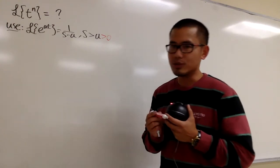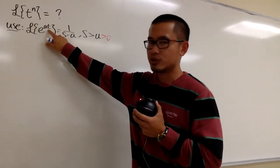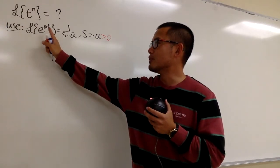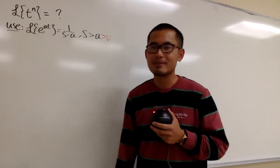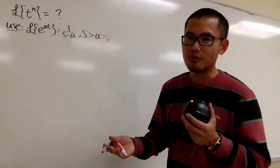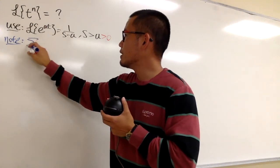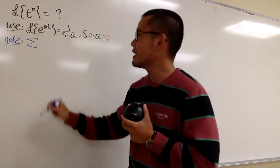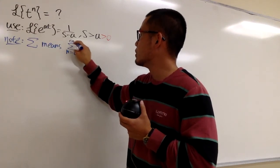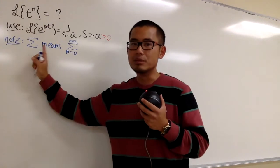I don't want to use the definition, so let me show you another approach using series. We'll put the series in summation form. Whenever I write sigma, it's going to mean that we have sigma when n goes from 0 to infinity. For simplicity, I'll just write sigma without repeating the full notation each time.